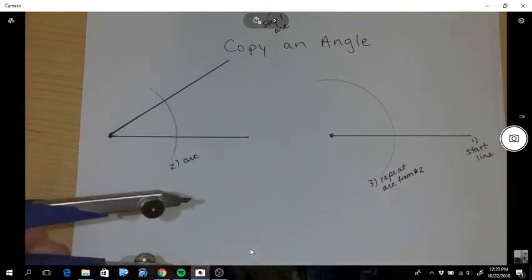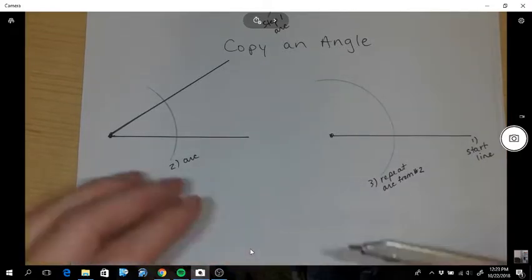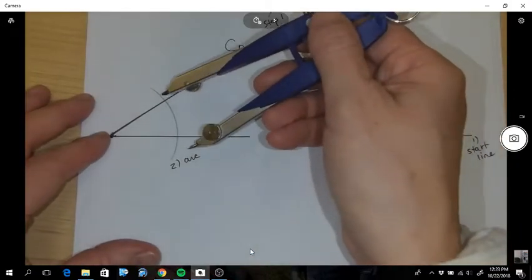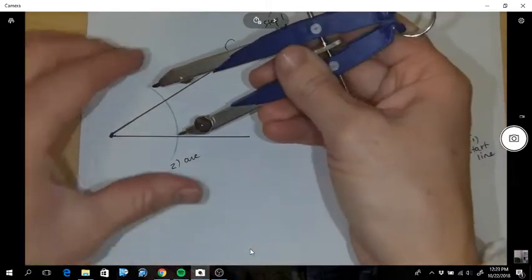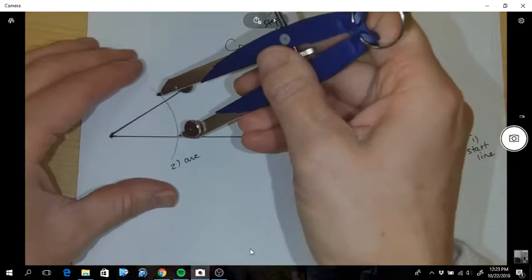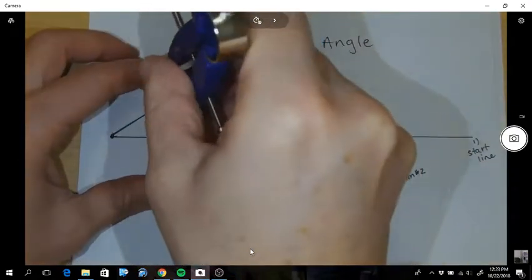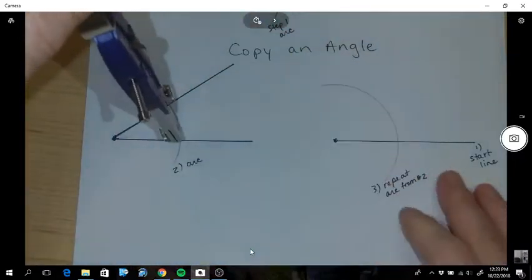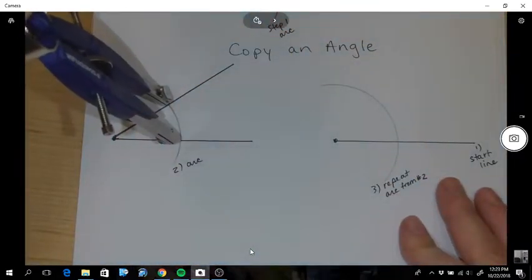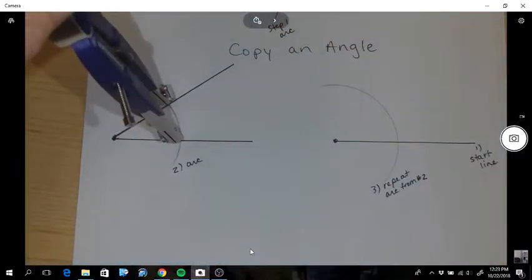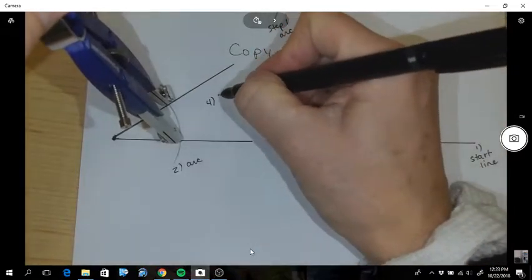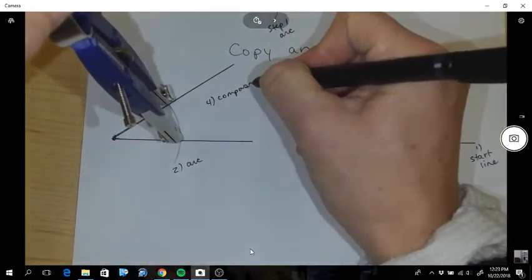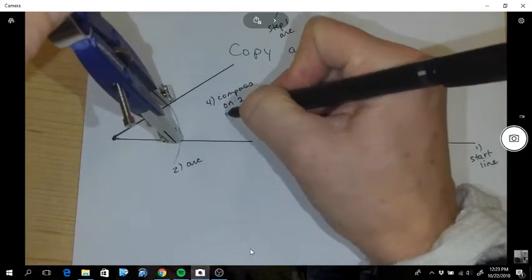Okay, now step four is you're going to want your compass to hit both of these intersections. Okay, so you can see here how I have points on each one. So step four, compass on two intersections.